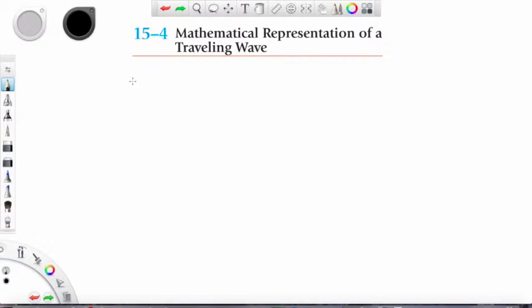In this video I will try to explain the mathematical representation of a traveling wave. A traveling wave could be for example a surface wave on water or it could be a sound wave.